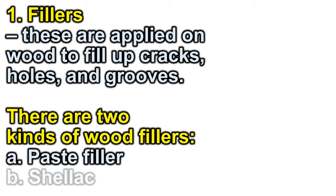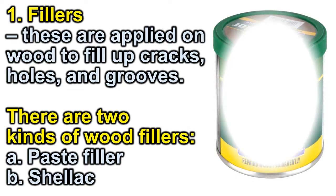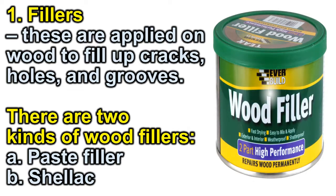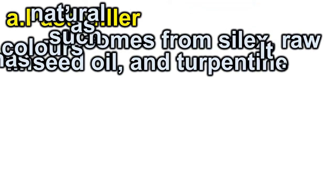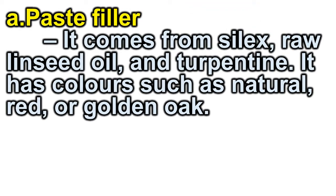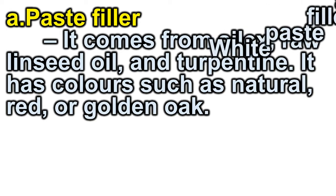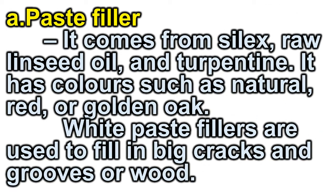There are two kinds of wood fillers: paste filler and shellac. A — Paste Filler: it comes from silex, raw linseed oil, and turpentine. It has colors such as natural red or golden oak. White paste fillers are used to fill in big cracks and grooves in wood.